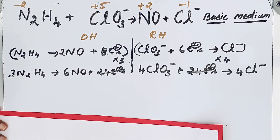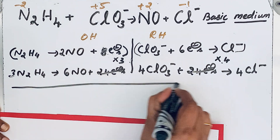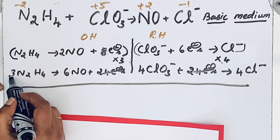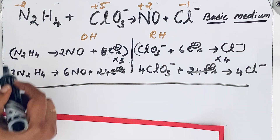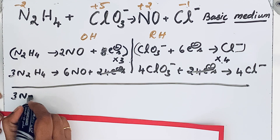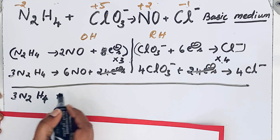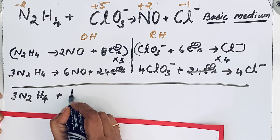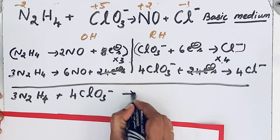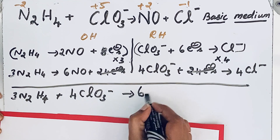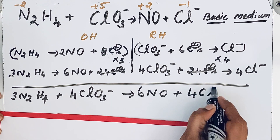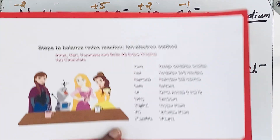Once that step is over, we rewrite the original equation with the updated coefficients. N2H4 becomes 3 N2H4; ClO3 minus becomes 4 ClO3 minus. On the product side, NO becomes 6 NO and Cl minus becomes 4 Cl minus. So: 3 N2H4 + 4 ClO3 minus → 6 NO + 4 Cl minus.